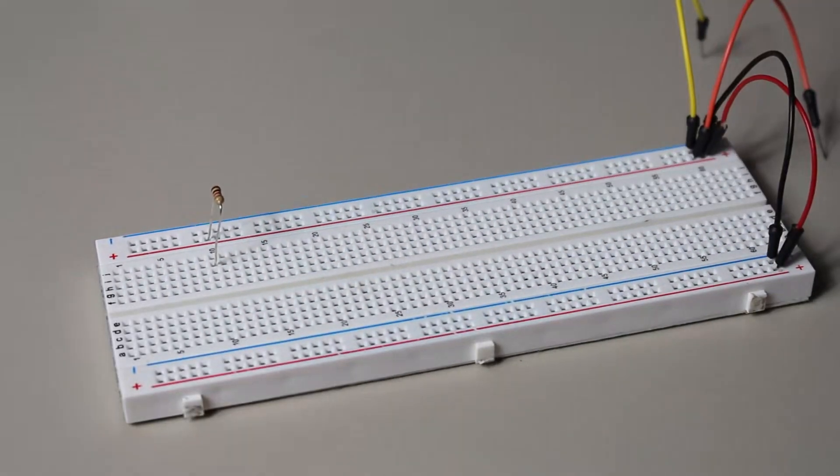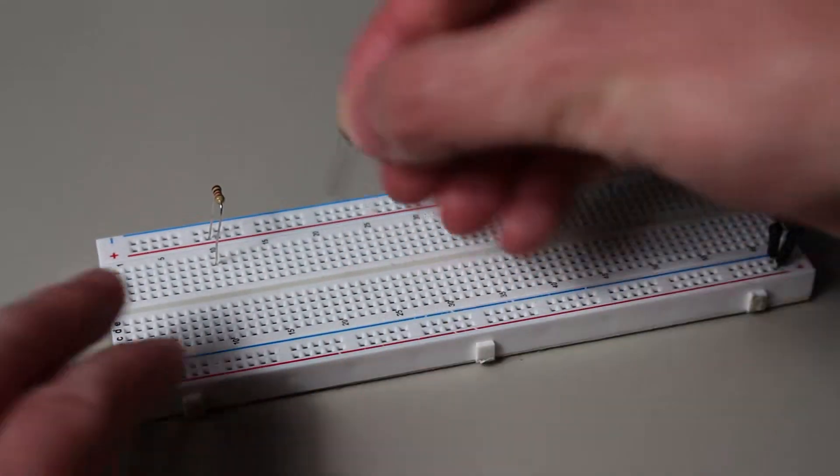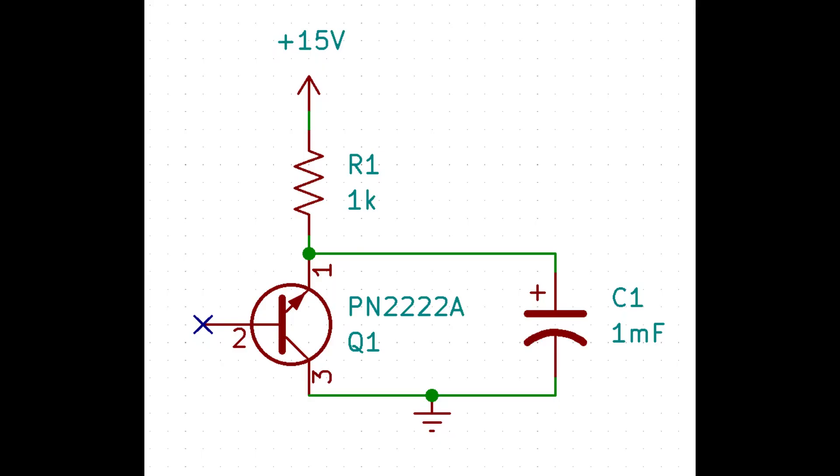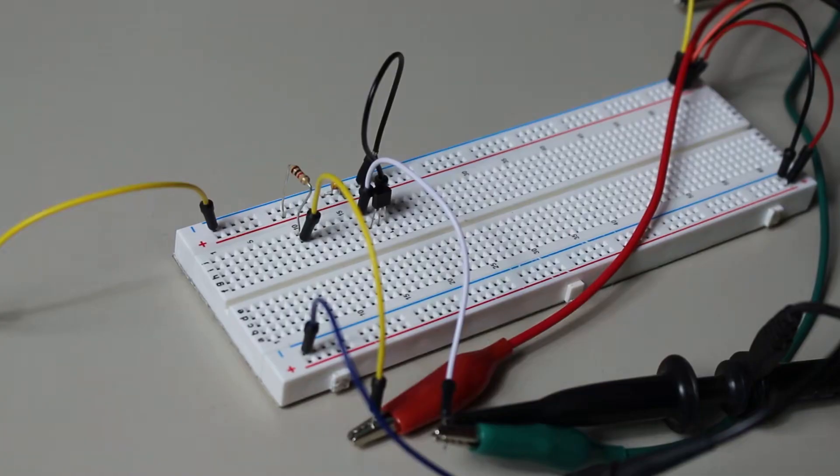For today, let's focus on the simplest oscillator that we can make, which is just a negister and a capacitor. Make sure to leave the base of the transistor unconnected, because otherwise it will mess with the oscillations. For this experiment, I used a 1K resistor, a 1mF capacitor, a 2N2222 transistor, and a 15V power supply.